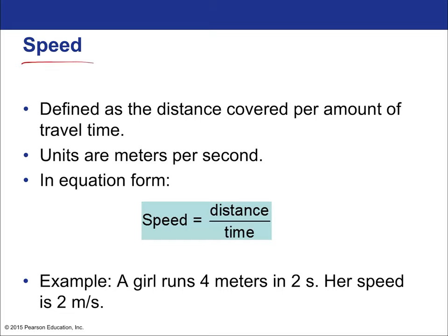What is speed? Speed is defined as a distance covered per amount of travel time — it's distance per time. The units are meters per second, written as m/s. In equation form, speed equals distance over time.